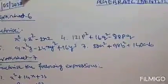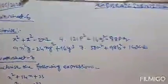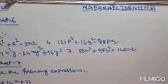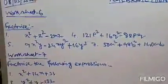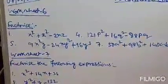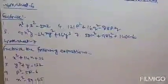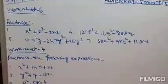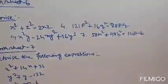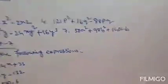Good evening students. Today we will start worksheet 6 and worksheet 7 from algebraic identities. This is the last session of this chapter and we will complete it in this session. So there are two worksheets remaining: worksheet 6 and worksheet 7. The first question from worksheet 6 is to factorize. Before factorizing, just recall the three identities we have learnt from the beginning of this chapter.